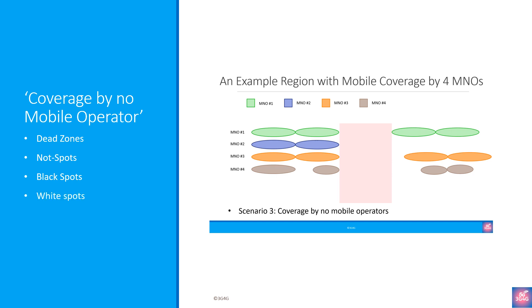On the other hand, in Germany, the term used to refer to areas with no coverage is white spots, rather than the more commonly used black spots.